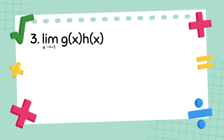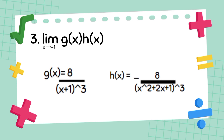Now we are going to try and solve the given equation: the limit of g of x as x approaches negative 1 and the limit of h of x as x approaches negative 1. Our given values are g of x equals 8 over x plus 1 raised to 3, and h of x equals negative 8 over x squared plus 2x plus 1 raised to 3.